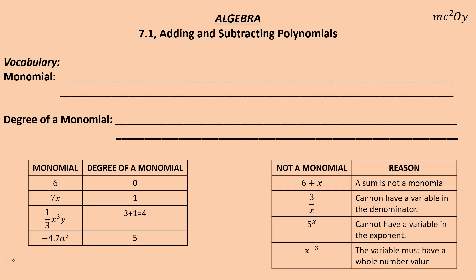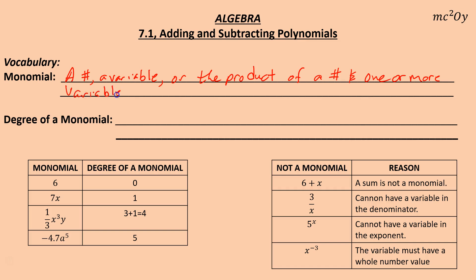A monomial. A monomial is a number — let's write it out — a number, could be a variable, or could be the product of a number and one or more variables,